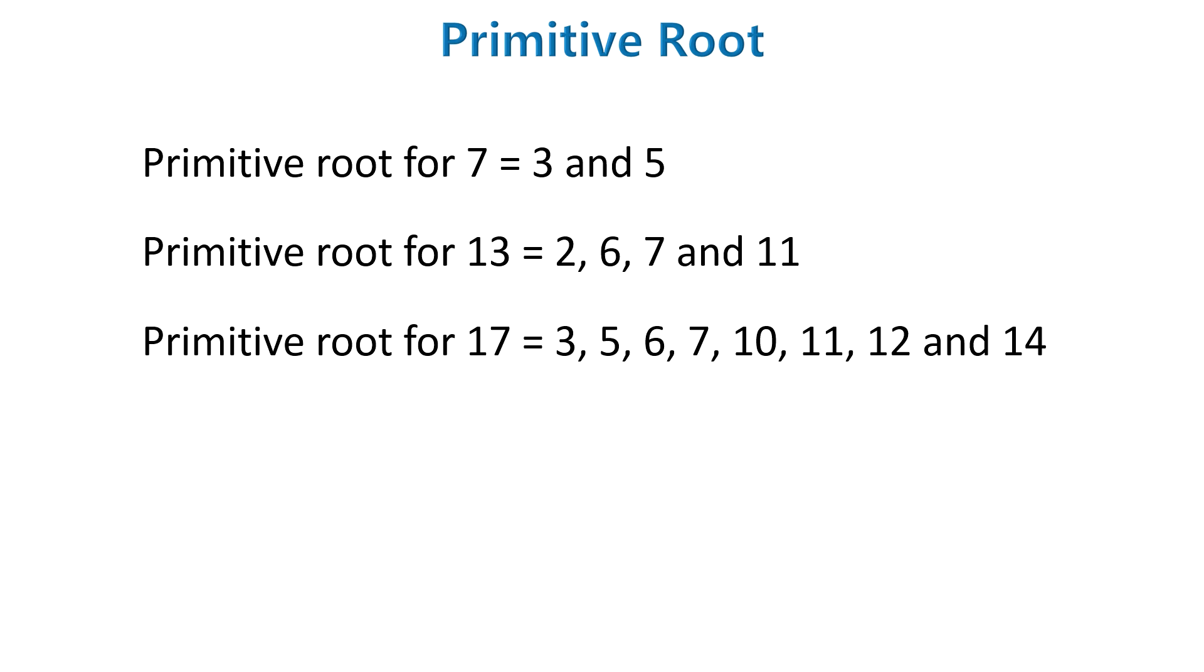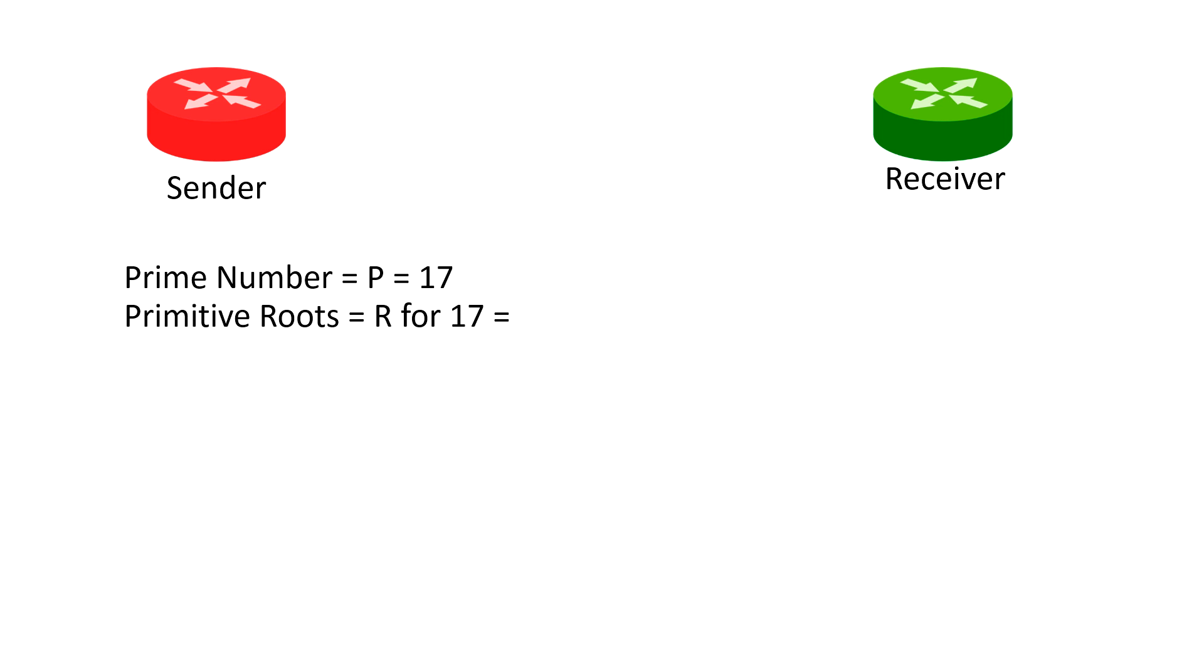Now you know how to calculate modulus, what is a prime number and what is primitive root and how to calculate them. Now finally let's see how Diffie Hellman works by using these 3 objects. Let's assume that we have 2 routers red and green. Red is a sender and green is receiver.